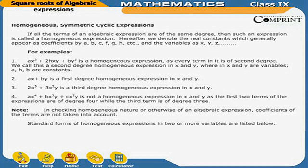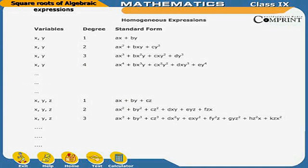Standard forms of homogeneous expressions in two or more variables: for variables x, y of degree 1, the standard form is ax + by; degree 2, ax² + bxy + cy²; degree 3, ax³ + bx²y + cxy² + dy³; degree 4, ax⁴ + bx³y + cx²y² + dxy³ + ey⁴.